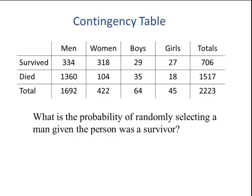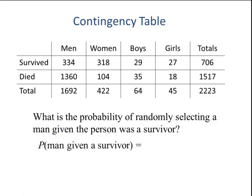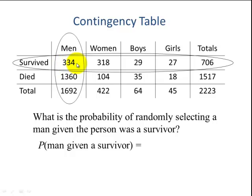Now this is our first example of conditional probability. What is the probability of randomly selecting a man given the person was a survivor? Since we know the person is a survivor, we're only looking at survivors, which total 706. How many of those were men? It was 334. So the answer is 334 divided by 706.